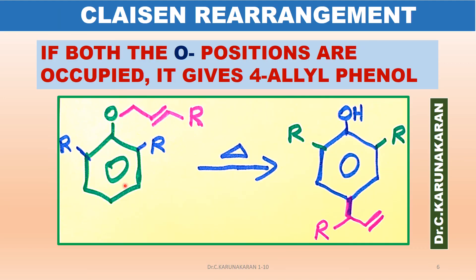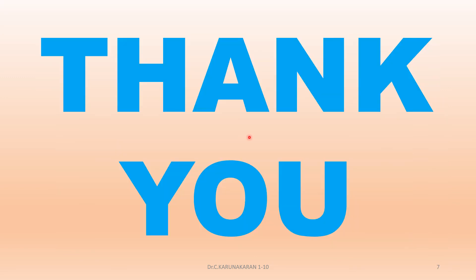Let us consider another example where both the ortho positions are occupied. If both the ortho positions are occupied, then the allyl group will migrate to the para position, giving 4-allyl phenol. Thank you for watching.